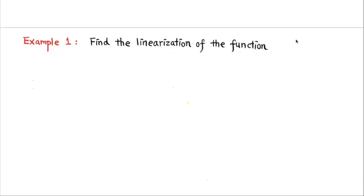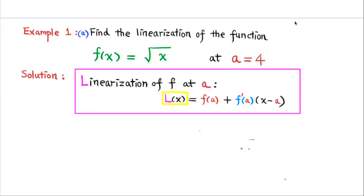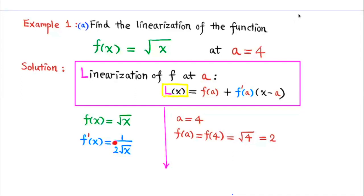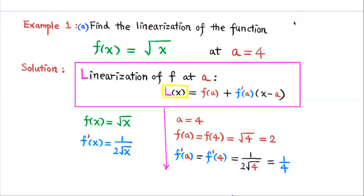Example 1: Find the linearization of the function f(x) equals the square root of x at a equals 4. The linearization is L(x) equals f(a) plus f'(a) times the quantity x minus a. Here a equals 4 and f(a) equals 2. Since f(x) equals the square root of x, we have f'(x) equals 1 over 2 square root of x. And f'(a) equals f'(4), which equals 1 over 4.